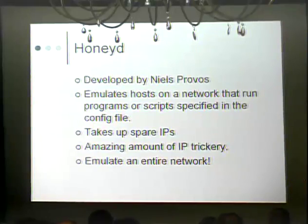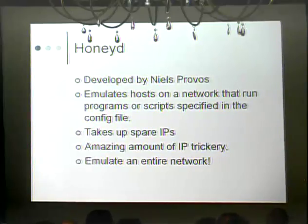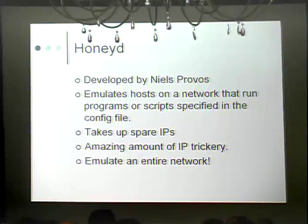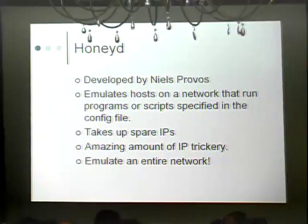HoneyD has very good IP trickery. Class Cs are just the beginning — I've heard of people running more or less entire address spaces. You can say 'here's your class C, but when you're responding emulate yourself over a 64 kilobit link with 1,000 millisecond latency.' It does a very good job convincing people — you're actually a Linux box but you'll respond back 'I'm Solaris.' It will completely fool Nmap because HoneyD takes Nmap's OS fingerprinting file and uses that to spoof its responses back.